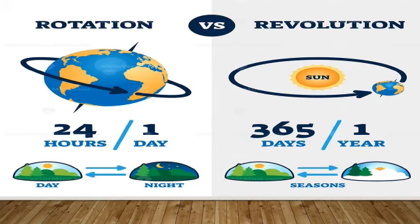Let's recall: Rotation is the movement of Earth on its axis. It causes day and night. And revolution is the movement of Earth around the sun. It causes seasons.